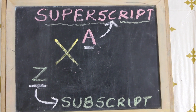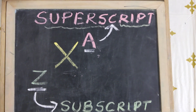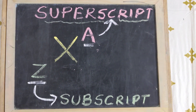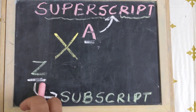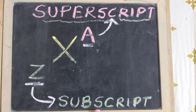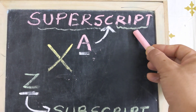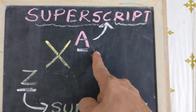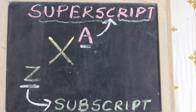While representing any element, whatever we write at the top — that means the mass number — is known as the superscript. Whatever we write at the bottom — that means the atomic number — is written in the subscript. The term for something written at the bottom is subscript, and the term for something written at the top is superscript. We always write the mass number in the superscript and the atomic number in the subscript.